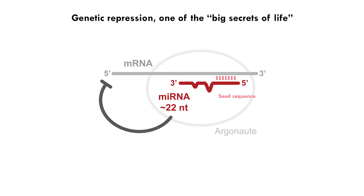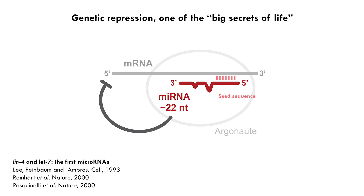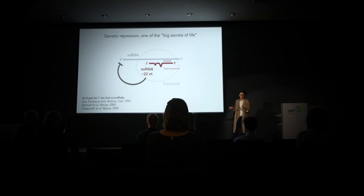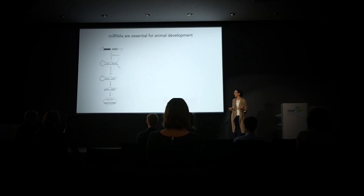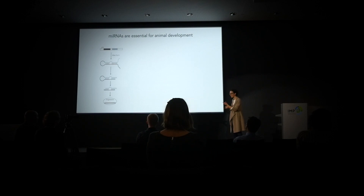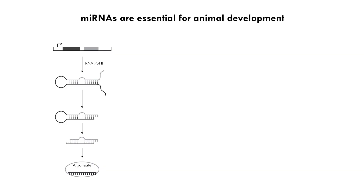MicroRNAs are very important for animal development. The first microRNAs, named LIN-4 and LET-7, were discovered in C. elegans because of their important roles in controlling the timing of larval development. MicroRNAs have been found to be essential for the development of every animal where they have been studied. MicroRNAs have to be produced from longer RNA precursors through two sequential cleavages by two RNA enzymes, namely Drosha and Dicer. We can remove Drosha or Dicer to abolish microRNA production as a whole, and when this happens in various animal models, it causes problems with embryogenesis.